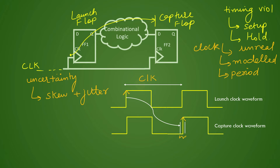Once the clock is synthesized — that happens in the CTS stage — once your CTS is done, at that time you will have the information about skew. So you remove that uncertainty portion and skew will not be there. At that time, your real latency of the clock will be there. In the placement stage, your clock is only modeled, so it will need an uncertainty portion, and that is this portion — this represents your uncertainty window.